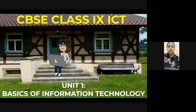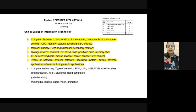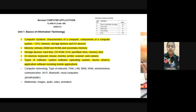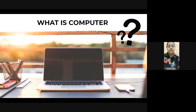Good evening everyone. In this session we are going to see CBSC Class 9 Information and Communication Technology, Unit 1 - Basics of Information Technology. CBSC has revised the syllabus for this session. There are going to be three main units: first is Basics of IT, second is Cyber Safety, and third is Office Tools. In this session we are going to cover the highlighted portion and in the next section we will cover the rest.